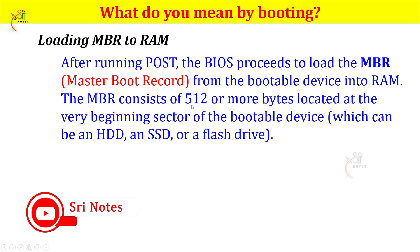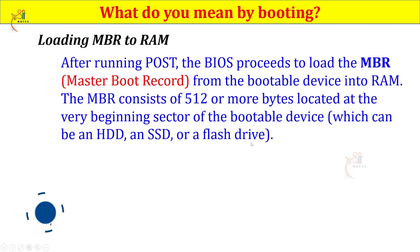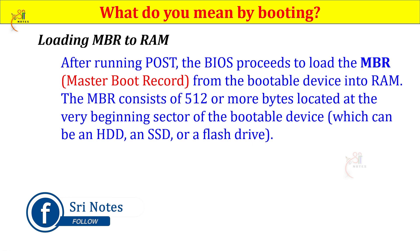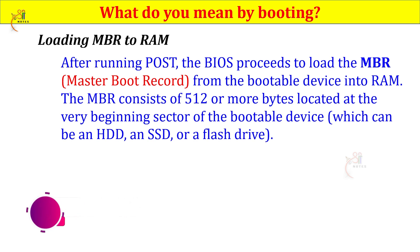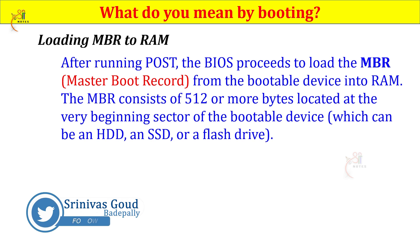The MBR consists of 512 or more bytes located at the very first sector of the bootable device, which can be an HDD, an SSD, or a flash drive. The operating system is installed on the hard disk or SSD. RAM is used to temporarily load the operating system and applications, while permanent data resides on storage devices like HDD or SSD.